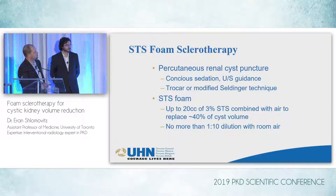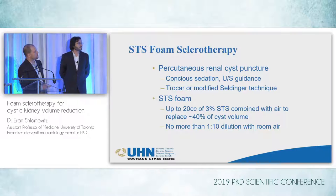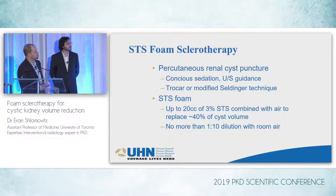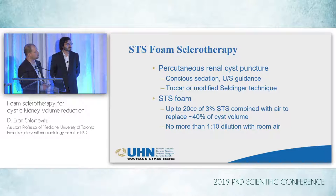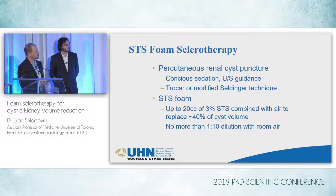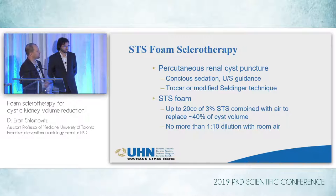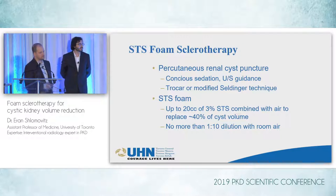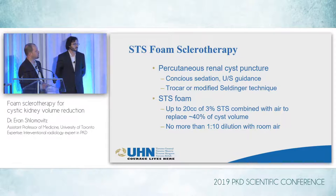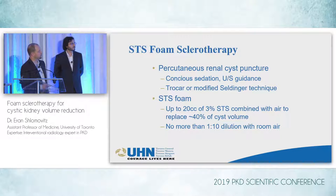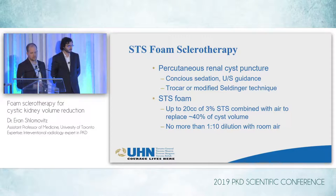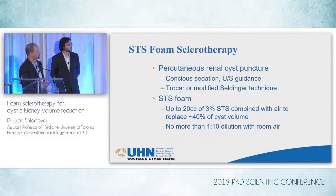For the foam, we use up to 20 cc's of 3% STS, combined with room air, and try to replace about 40 to 50 cc's of the volume that we remove. We don't want to over-distend the cysts because we don't want any foam to leak out — if you over-distend them, patients can have some pain. So we only replace about 40 to 50 percent at most of what we've taken out. You don't want more than about a 1-in-10 dilution of STS with room air, as it doesn't form a good foam if overly diluted.